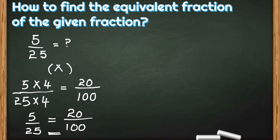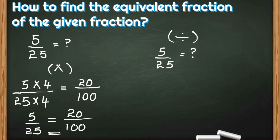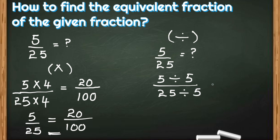Now let us use the division method. In the division method, we divide both the numerator and the denominator by any same number. Here we have to think by which number we can divide both the numerator, that is 5, and the denominator, 25. Both can be divided by 5.